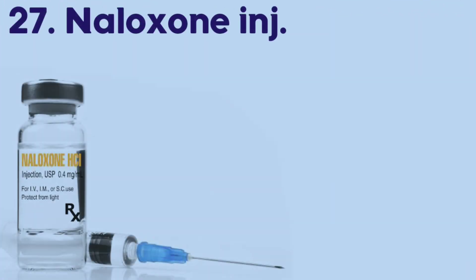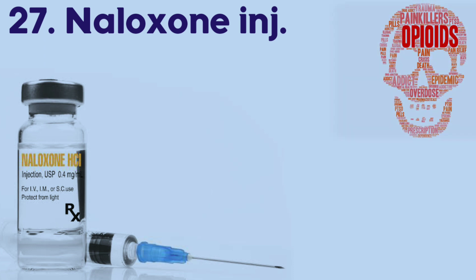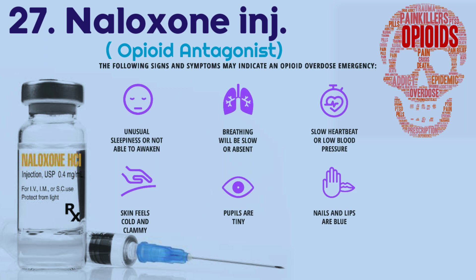Naloxone is used for the emergency treatment of known or suspected opioid overdose. This medication belongs to a class of drugs known as opioid antagonists. It blocks or reverses the effects of opioid medication, including extreme drowsiness, slowed breathing, or loss of consciousness.